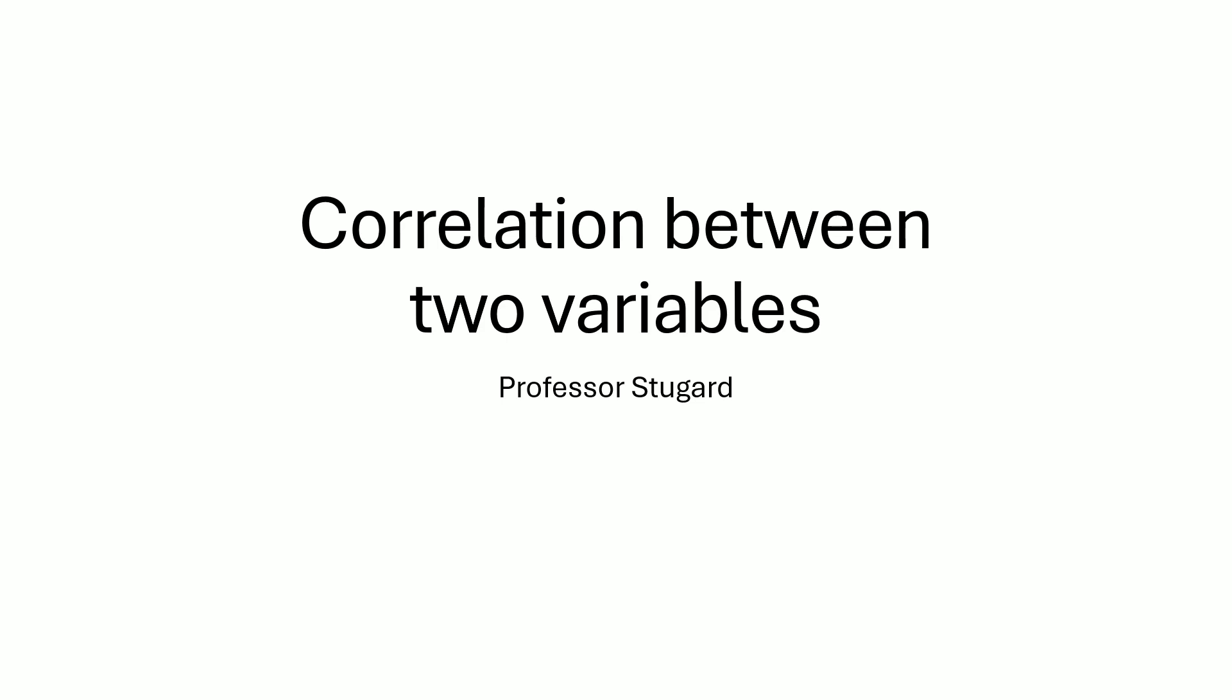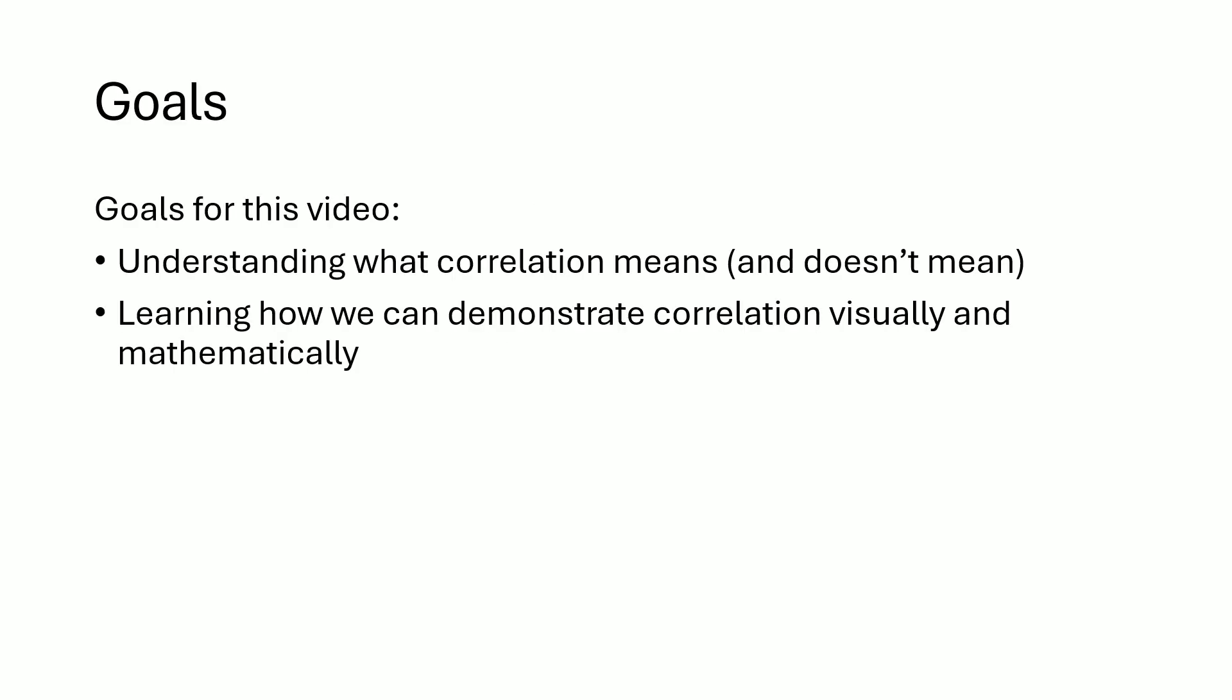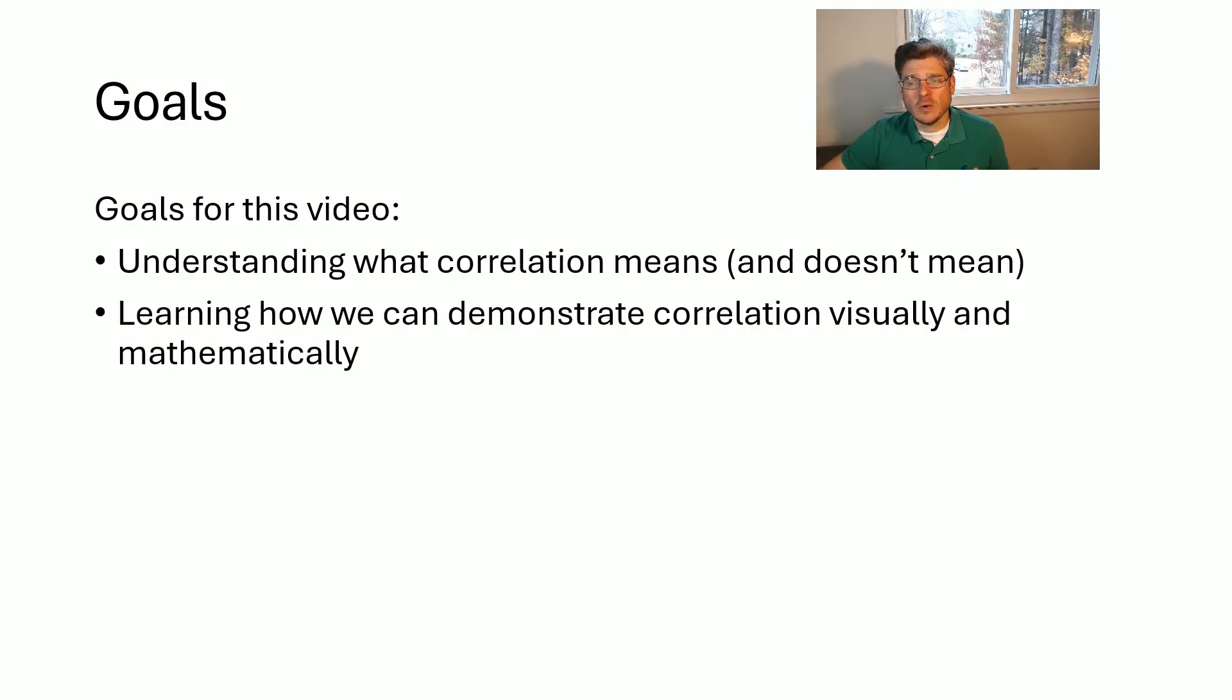Hi, this is Professor Stugard, and in this video we're going to discuss what it means when we have a correlation between two variables. In this video, our goals are going to be to first just understand what a correlation means, and even more importantly, what it does not mean. And then also how we demonstrate correlation visually, and then mathematically, what are the measures we use to determine whether or not these two variables are going to be related to each other.